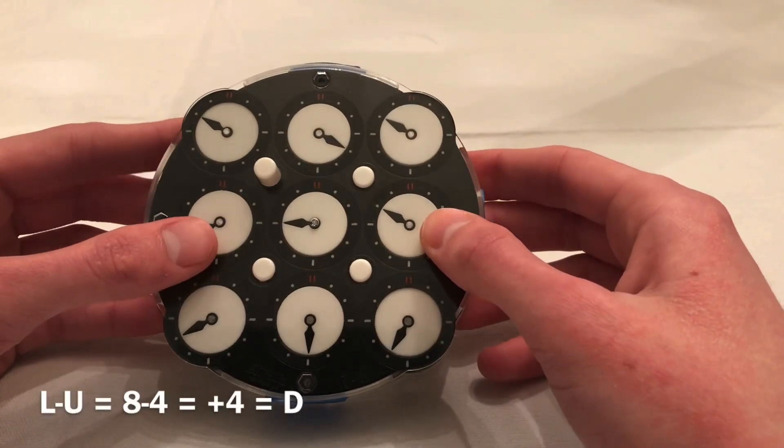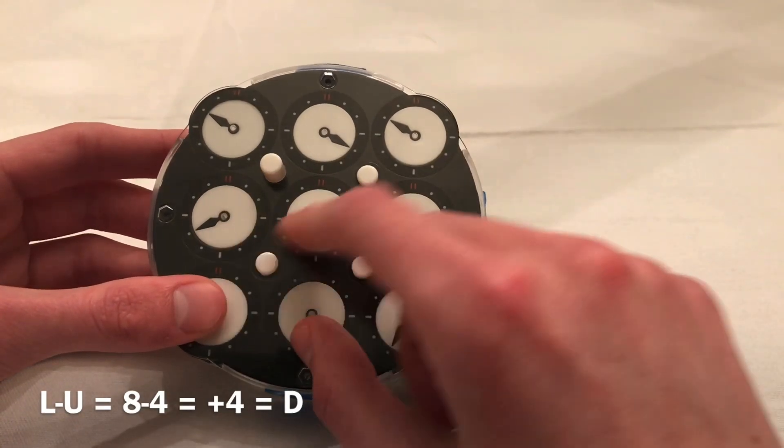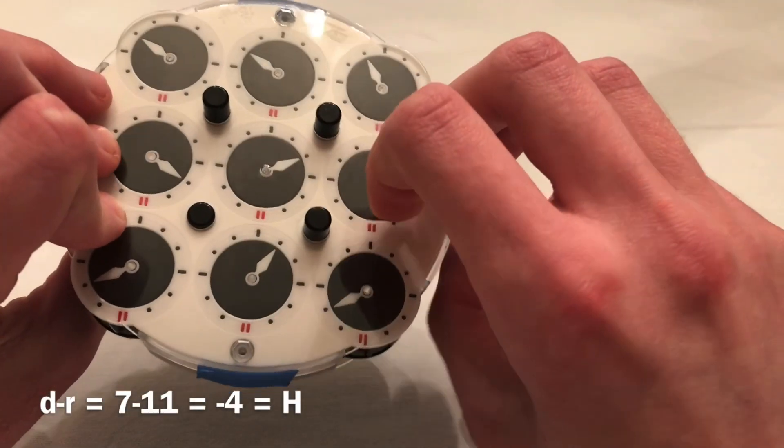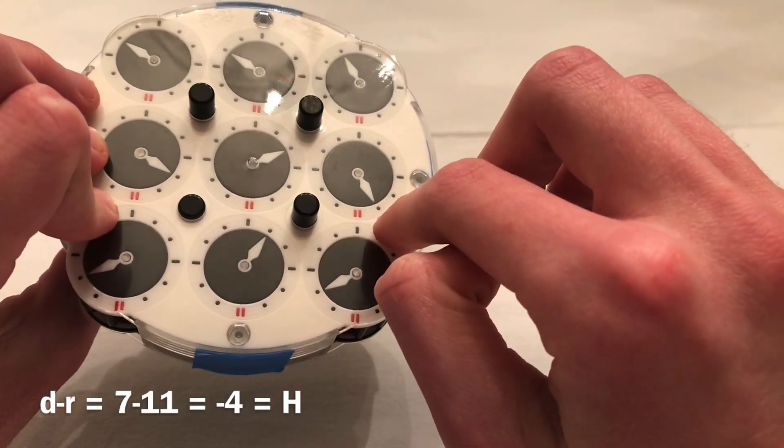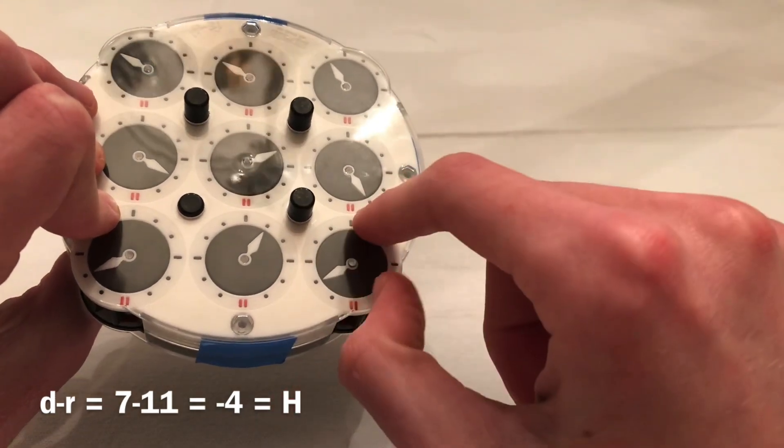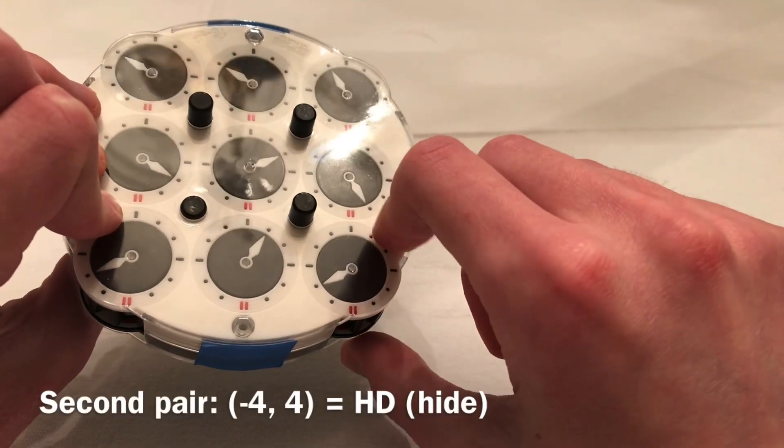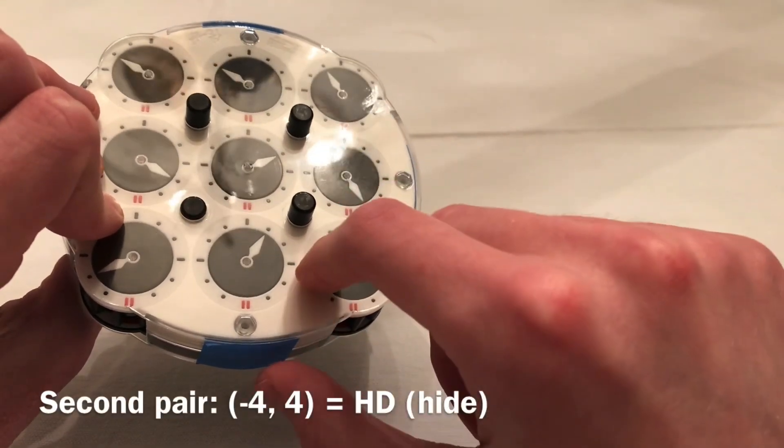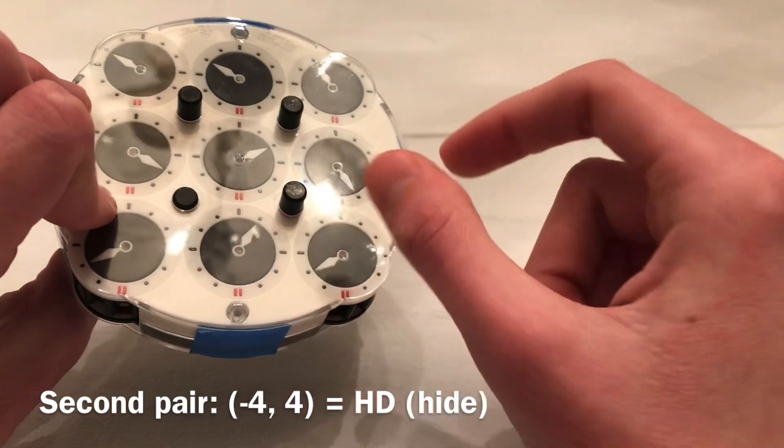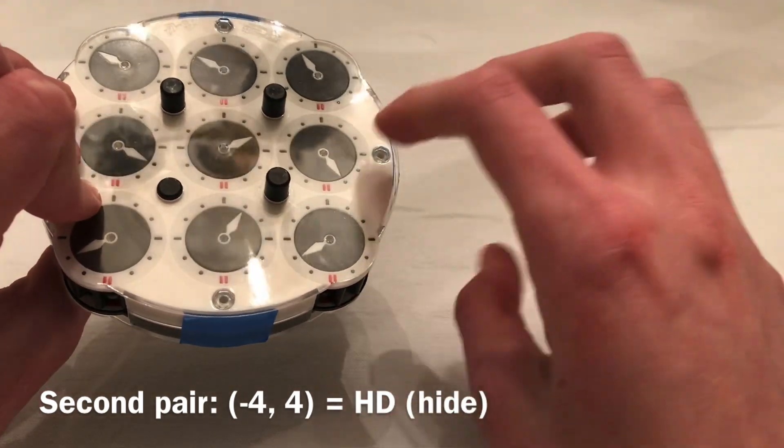And for the second pair, the first part is l minus u, so d, and then the second part is d minus r, which is negative 4. So that would be h. Now, for this, it's kind of weird, because the second thing you memorize is actually the first part of your pair. So, instead of being dh, you memo hd, so hide, for example.